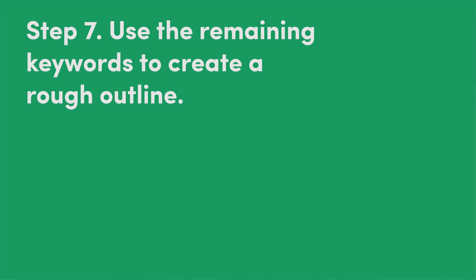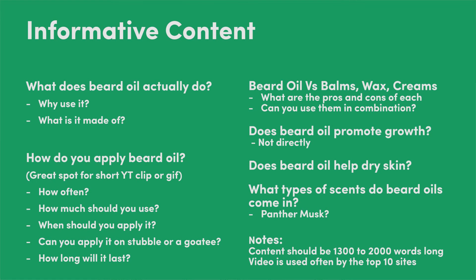So what you're actually going to do is step seven: use the remaining keywords to create a rough outline. You can see here I've done that. This is nothing groundbreaking — it's a very simple outline. I'm telling my editor we're going to do informative content, and instead of giving them keywords, I'm giving them the outline. I'm saying this section is going to be 'what does beard oil actually do?' Then I want you to address why you would use it and what it's made out of. Then I'll have a section on how to apply it, how often, how much, how long it lasts. These are all from the keywords, but I'm presenting it to the editor so it's much more about answering the questions and intent that the searchers have — to make one great resource that Google could look at and send people to when they're in the information-gathering stage.